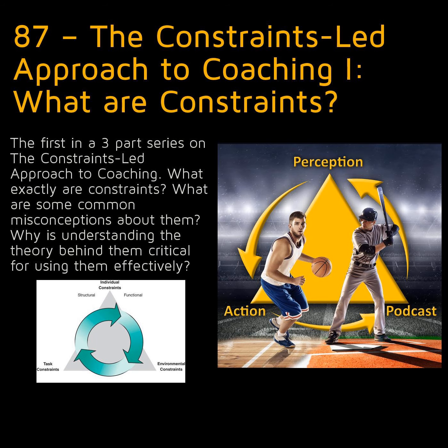Finally, there are individual or organismic constraints. These are things that reside within the performer themselves. Common ones we might think of are height, range of motion, and maximum speed. But they really include things at every level of analysis within an organism, all the way from broad structural traits to the rate at which an individual can form new synaptic connections in their brain. Whether a characteristic of an individual is a constraint depends on the nature of the task they're performing — for example, visual acuity may or may not be a constraint depending on the performer's task. If we've identified a specific individual characteristic as a constraint on performance, it may be possible to address this through strength and conditioning training, but it's likely going to take a long time and the training needs to be highly specific.